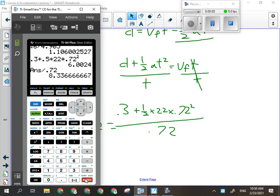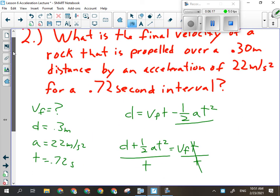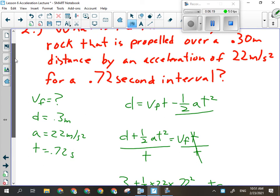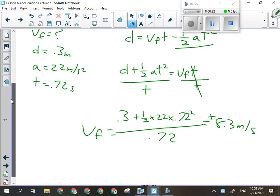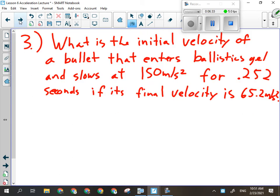So we're going to have .3 meters plus 1 half times 22 times .72 squared divided by .72. That'll get me my final velocity. So we're looking at a final velocity of 8.3 meters per second. Best I could do is positive for a vector on that because they didn't give me a direction in the question.